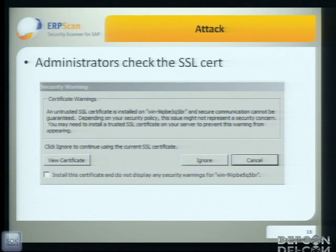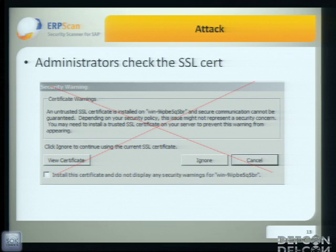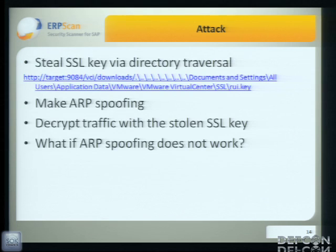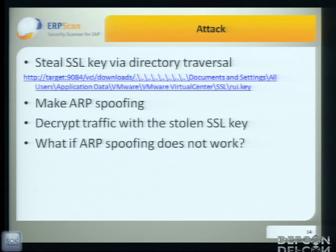But the administrators of this network were pretty clever — they added the certificate to trusted and didn't click through warnings. So that didn't work. We found another way: we just stole the key via directory traversal, then did ARP poisoning and decrypted the traffic.